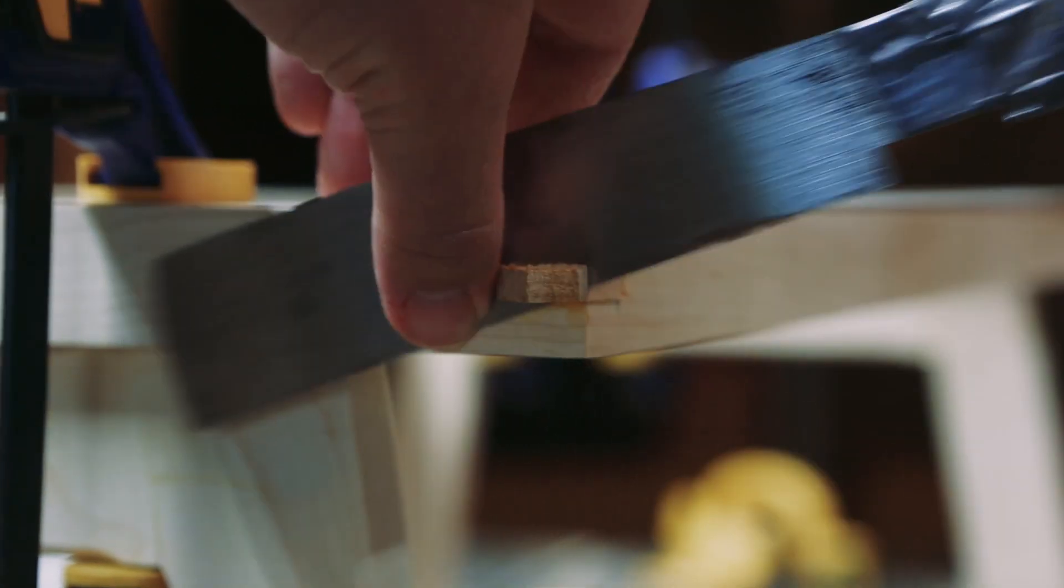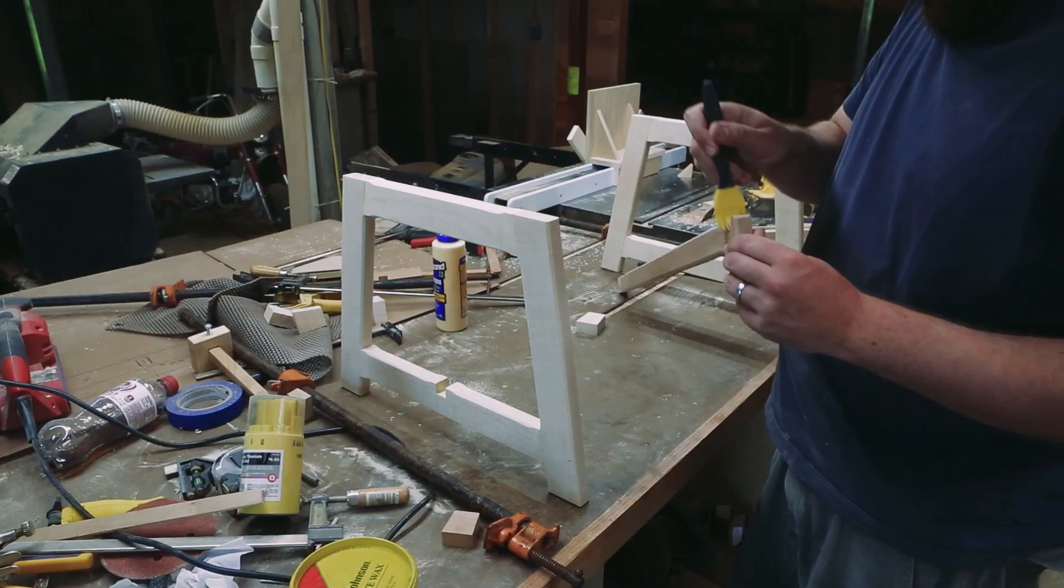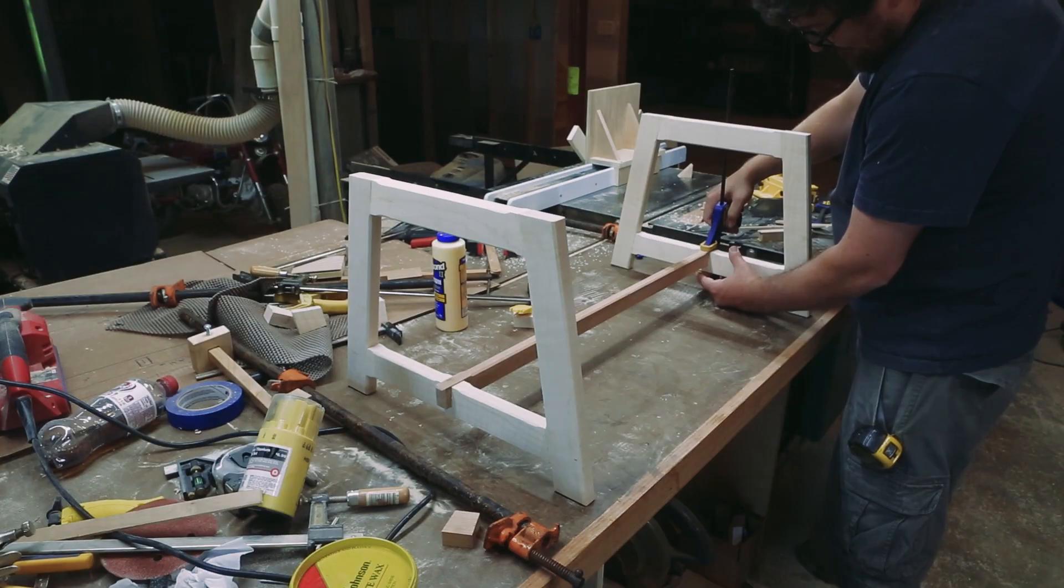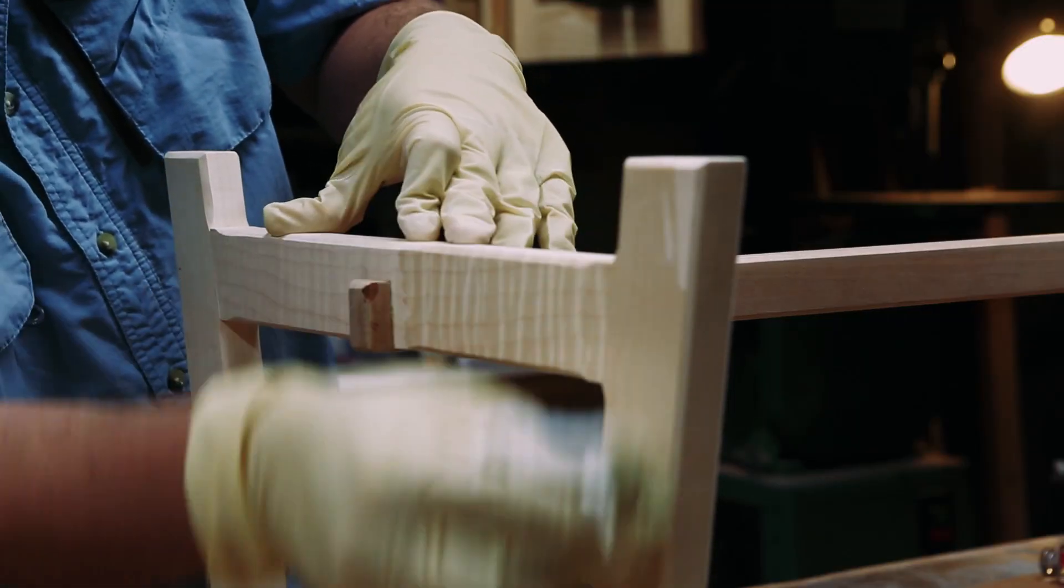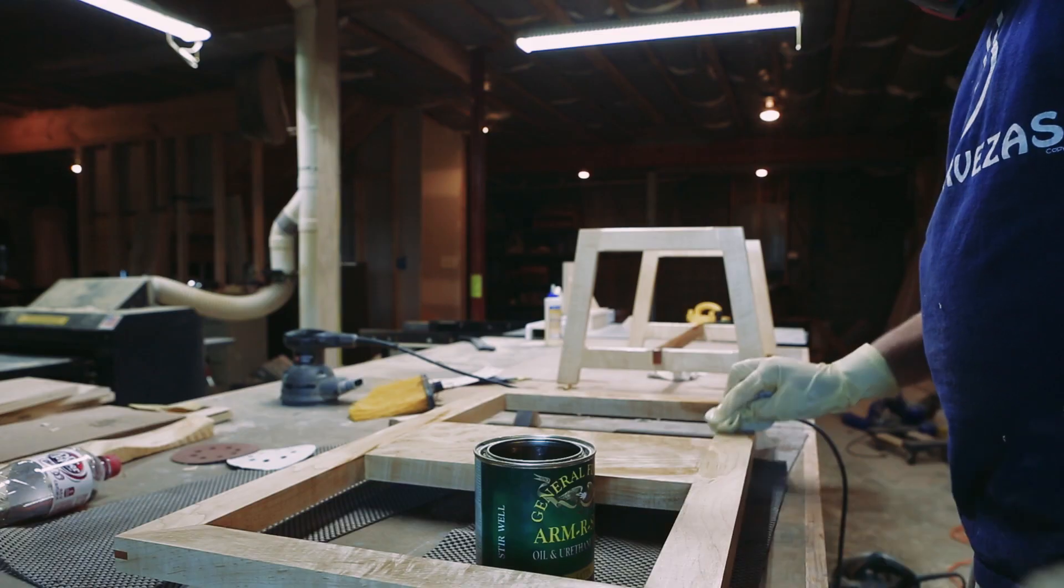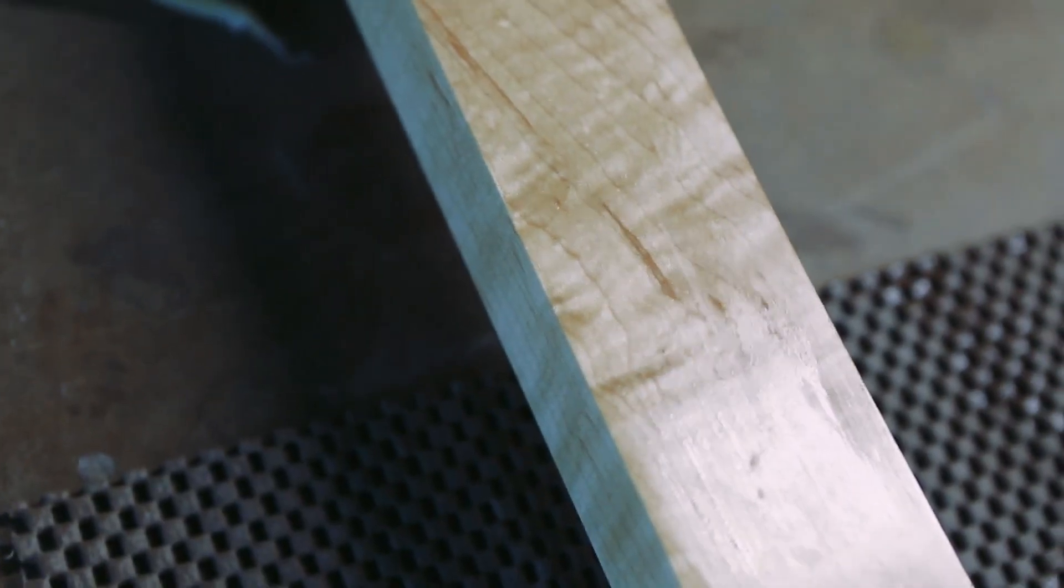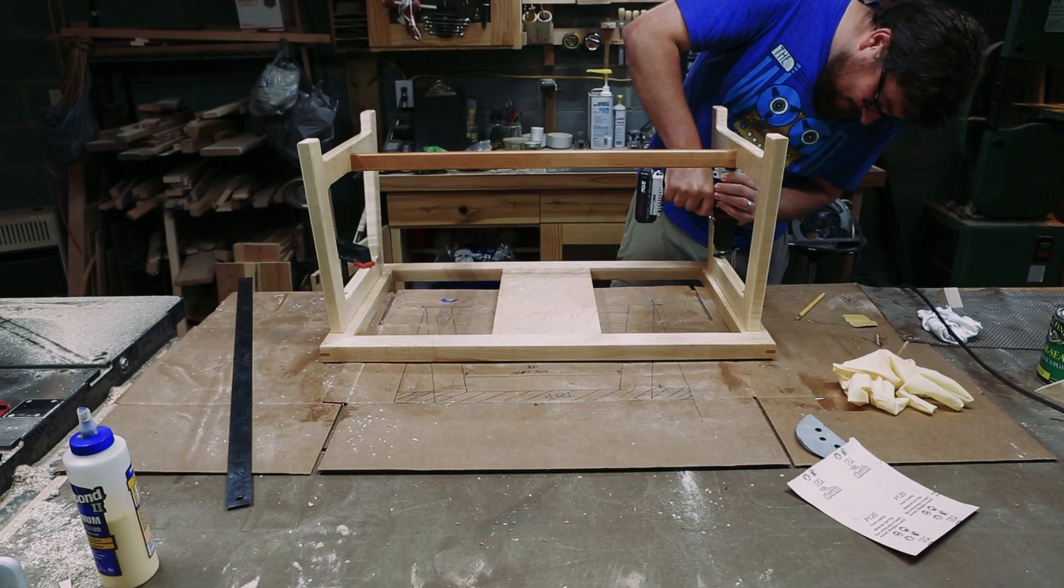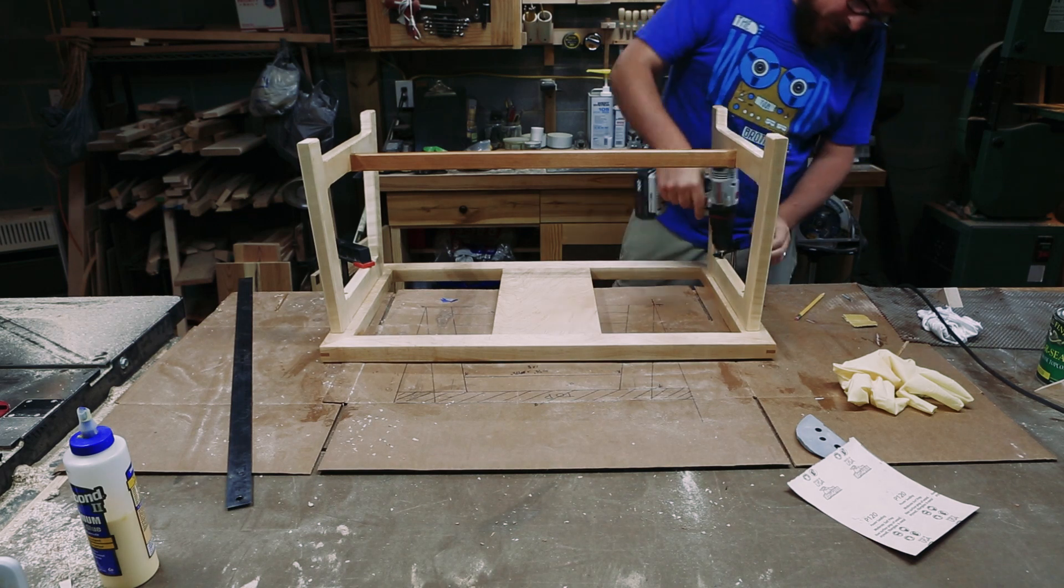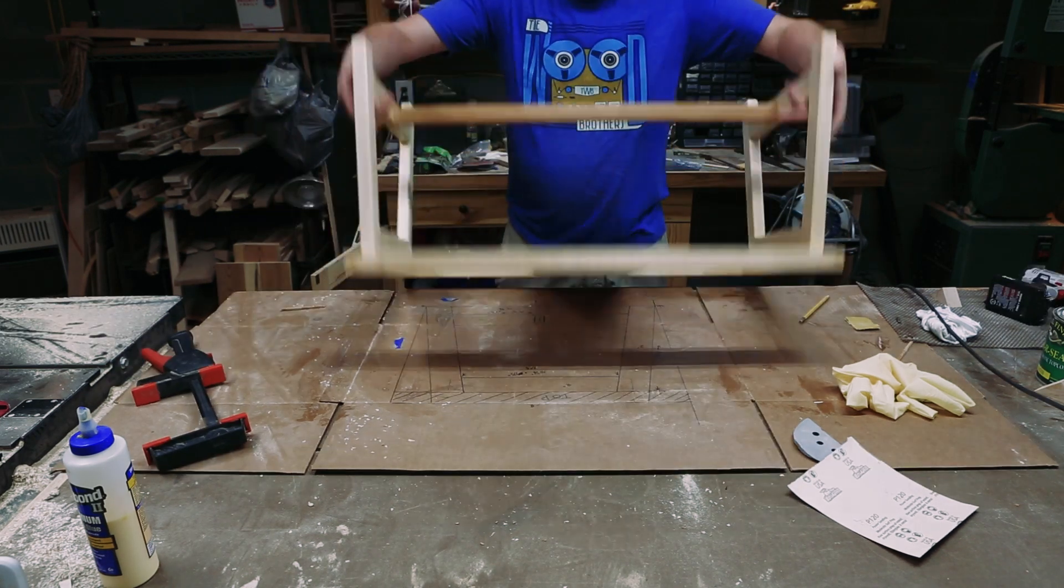I glued the trestle in place, then sanded and finished the top and base with Arm-R-Seal. This is a table, not a chew toy, so I'm not worried about the finish being food safe. My favorite word lately to describe wood has been chatoyant. It basically describes the cat's eye effect in certain grains. Look it up.